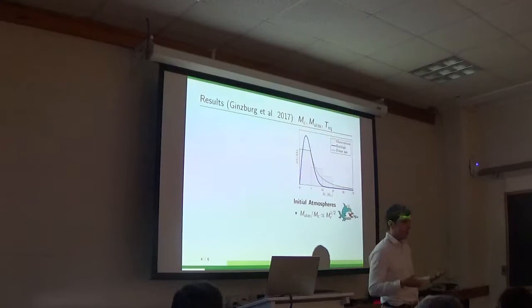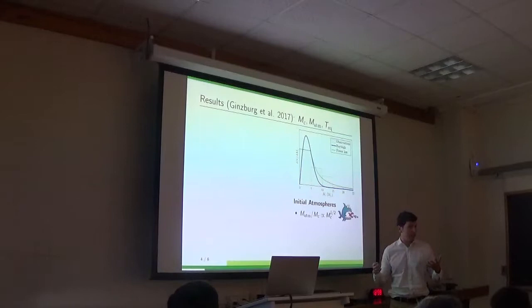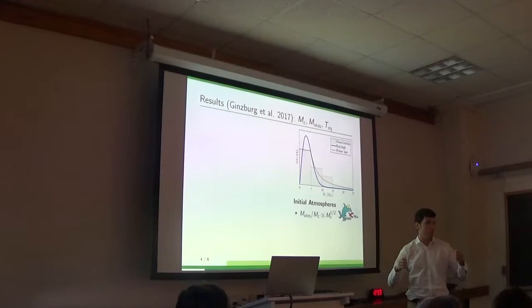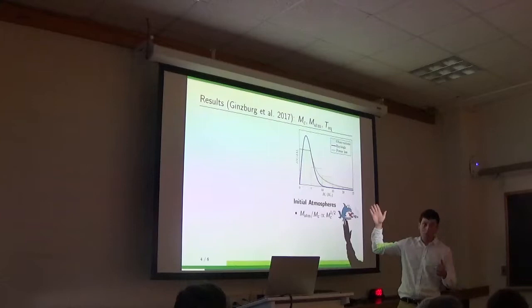So this is the intuitive idea, but now we want to do this more quantitatively. So we want to simulate the population of planets and let them evolve for a few gigayears and check the distribution. So first we need to know how to distribute the planets. So first of all, for all of these planets, we know their periods. So we know their distances from the stars. So we know their equilibrium temperatures. So this one is easy.